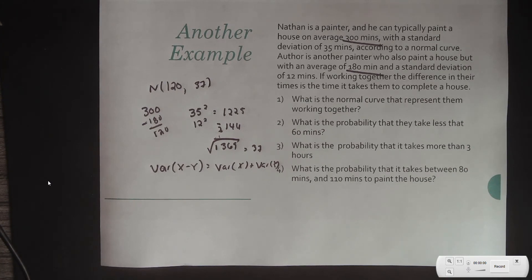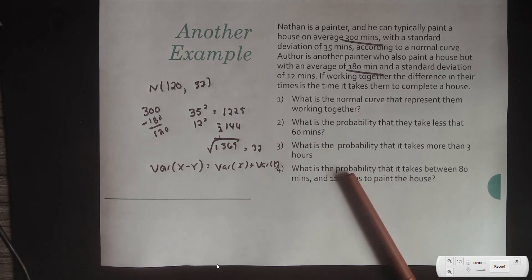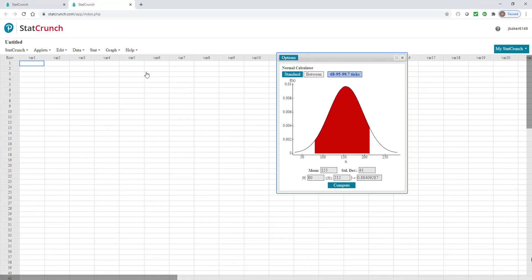Okay, again, then if you want to find what's the probability that it takes less than 60 minutes, let's walk back over to StatCrunch. So, we're going to change our mean into 120, our standard deviation into 37, and change back to a standard. We want less than 60 minutes. You have a 5% chance of that happening.